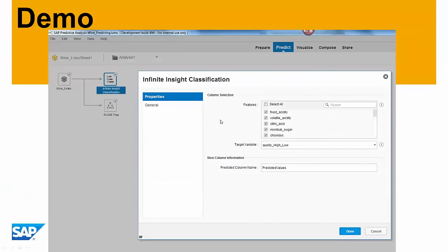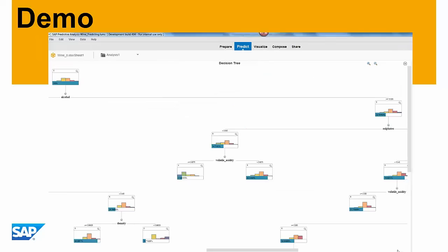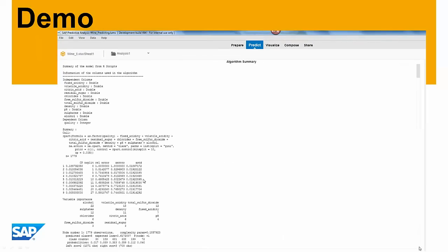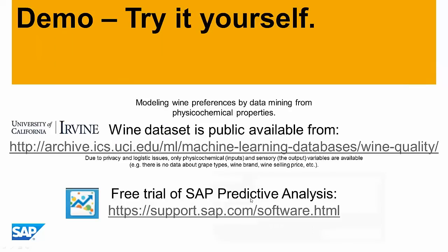To recap what I did: I added the different indicators, saw how each contributed, examined the confusion matrix and gain chart, reviewed the decision tree, and saw how we remove complexity by using drag-and-drop functionality. I saved my model and applied it to new data. You can do this yourself — the dataset is available at the University of California wine quality data link, and you can get a free trial of SAP Predictive Analysis.